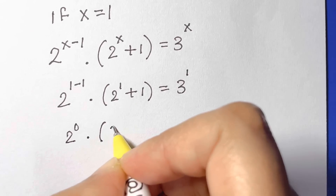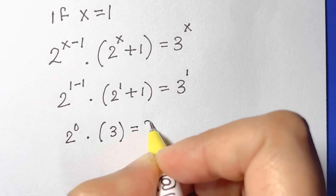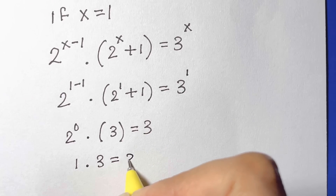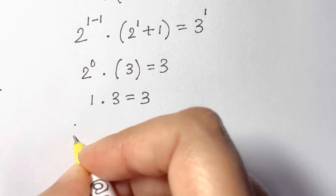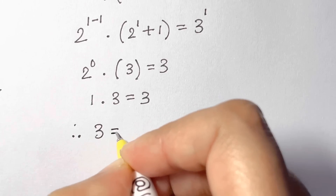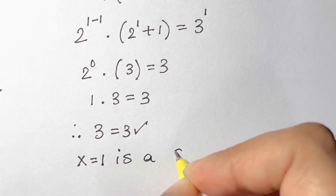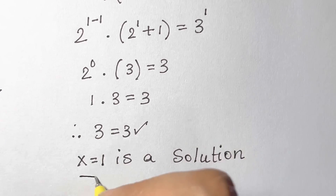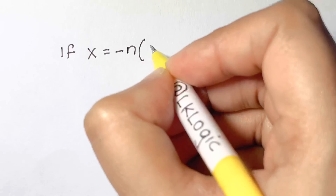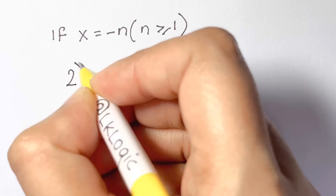So 2 to the power of 0 times 3 equals 3. Since 2 to the power of 0 is 1, we have 1 times 3 equals 3, so 3 equals 3. Therefore x equals 1 is a solution. Now if x equals negative n where n is greater than or equal to 1, we return to equation 1.